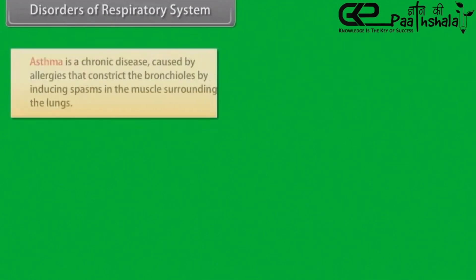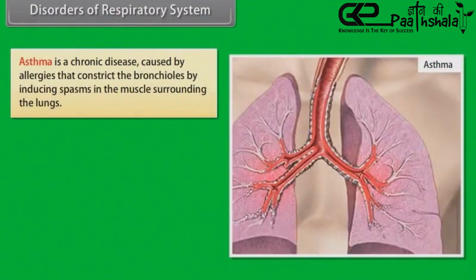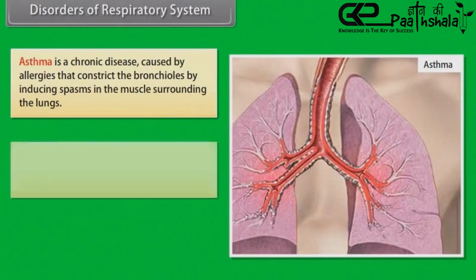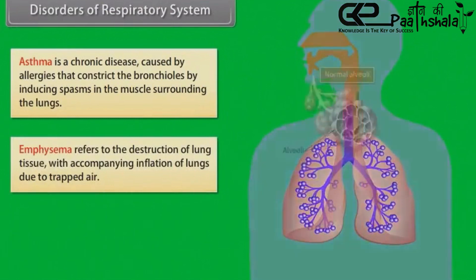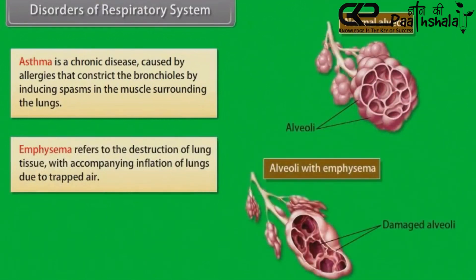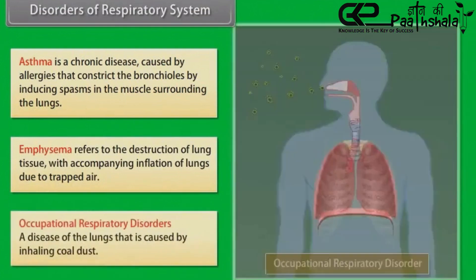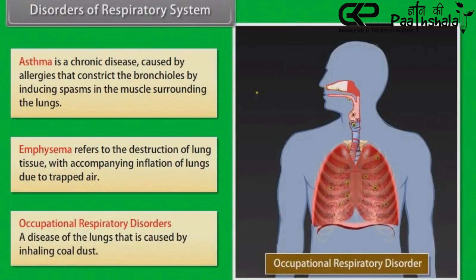Disorders of Respiratory System. Asthma is a chronic disease caused by allergies that constrict the bronchioles by inducing spasms in the muscles surrounding the lungs. Emphysema refers to the destruction of lung tissue with accompanying inflation of lungs due to trapped air. Occupational respiratory disorders include diseases of the lungs caused by inhaling coal dust.